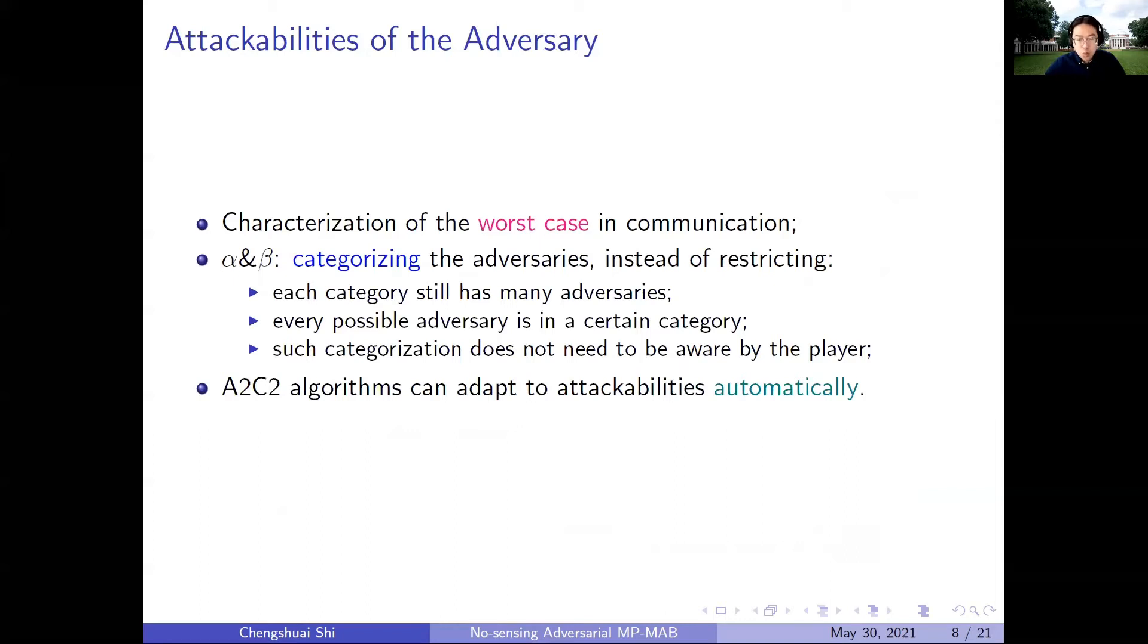Correspondingly, we define the global attackability parameter, which is β here. Both concepts of attackability capture the worst case in implicit communication, and we are trying to fight these worst cases. However, note that these attackability parameters α and β are not restrictions on the adversaries. Instead, they let us categorize the adversaries. In each category, there are still many adversaries, and any adversary that belongs to a certain category. More importantly, we do not necessarily need the players to be aware of these parameters, but we will design algorithms that can adapt to them automatically.